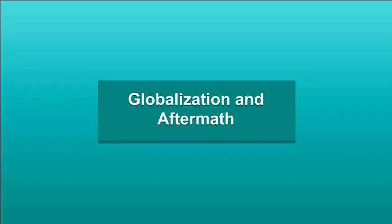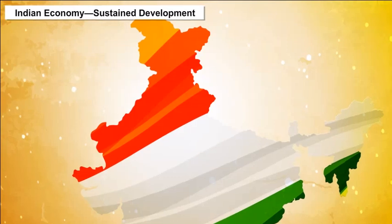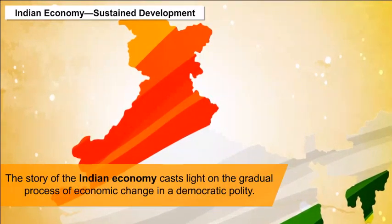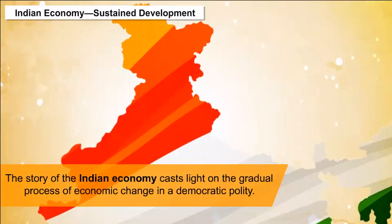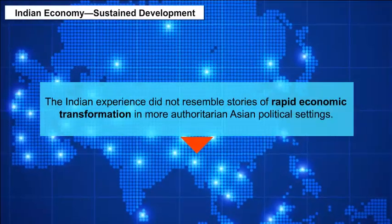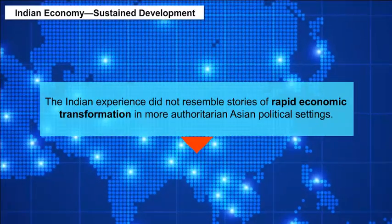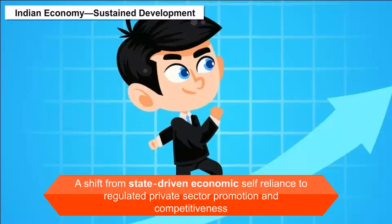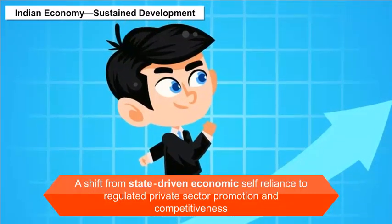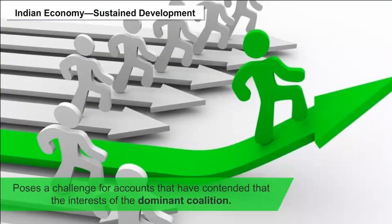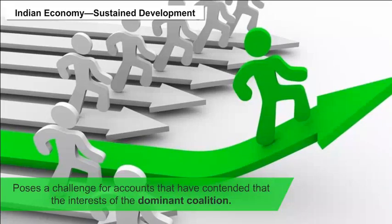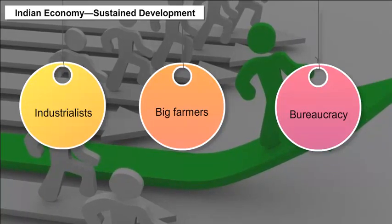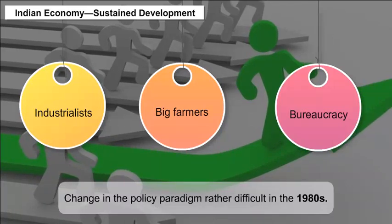Globalization and Aftermath – Indian Economy and Sustained Development: The story of the Indian economy casts light on the gradual process of economic change in a democratic polity. The Indian experience did not resemble stories of rapid economic transformation in more authoritarian Asian political settings. A shift from state-driven economic self-reliance to regulated private sector promotion and competitiveness posed a challenge, as the dominant coalition of industrialists, big farmers, and the bureaucracy had made policy change rather difficult in the 1980s.